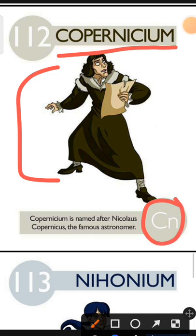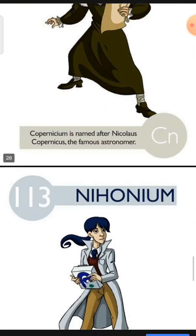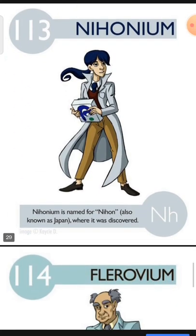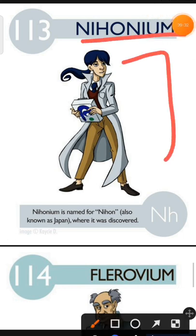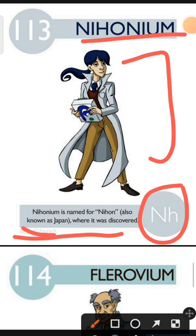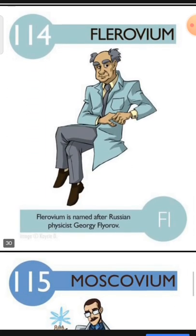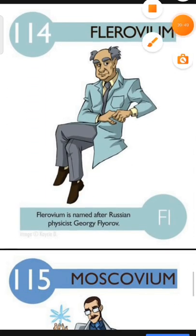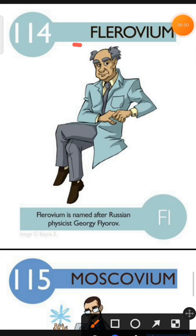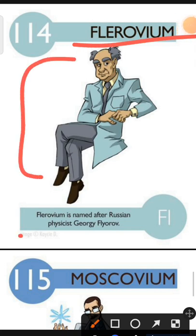Element number 113 is Nihonium. The characteristic of Nihonium is: Nihonium is named for Nihon, also known as Japan, where it was discovered. Element number 114 is Flerovium. The characteristic of Flerovium is: Flerovium is named after Russian physicist Georgi Flyorov.